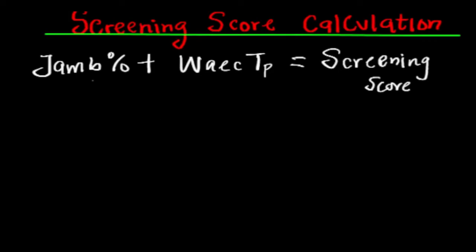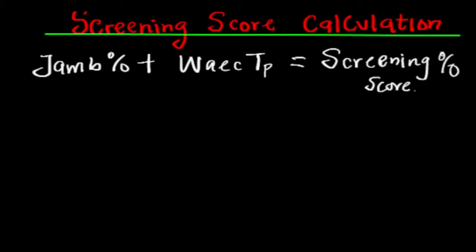First thing you need to understand is that as far as UTME percent is concerned, it is the percentage of your UTME score. Your WAEC total point will take 50% while your UTME score will also take 50%. So 50% of UTME plus 50% of WAEC will give rise to the total screening score — both of them together make up the 100% screening score.